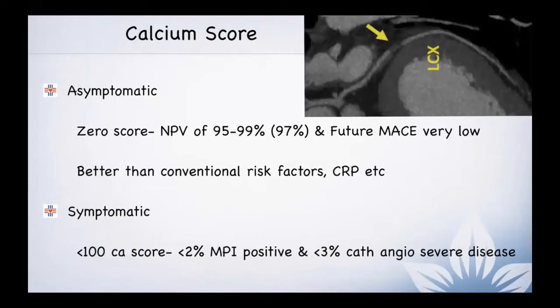If asymptomatic patients undergo calcium scoring, there is a 97% negative predictive value, with future major adverse cardiac events being very low. These are much better than conventional risk factors. However, if the patient is symptomatic and the calcium score is less than 100, then less than 2% of nuclear medicine studies came back positive, and less than 3% of CT angiography showed severe disease.